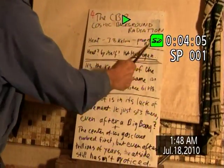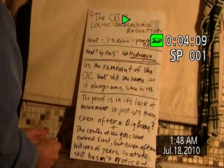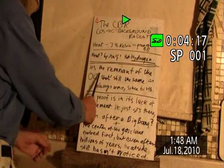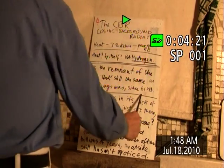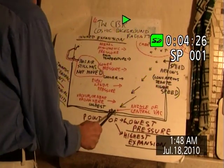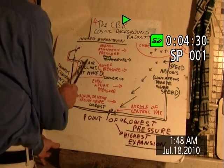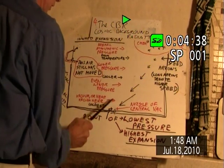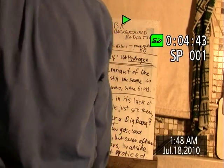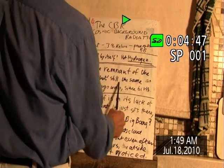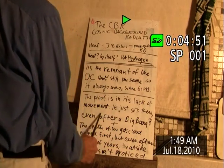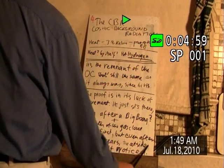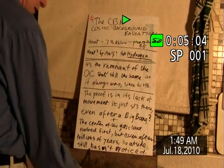Now, there's a cosmic background radiation way, way back up there — there's a heat. They say it's proof of the Big Bang, but I think it's warm hydrogen; it's the remnant of the original cloud, still the same as it always was since birth. However, this vacuum cleaner has been running for five minutes, but the air up here has still not moved. The air is elastic — this air doesn't even know there's a vacuum cleaner running, even after five minutes. The original hydrogen cloud is still there; this is a remnant of it. The proof is in its lack of movement — it just sits there. After a Big Bang, would it sit there? I don't think so. The center of the gas cloud evolved first, but even after trillions of years of evolution, the outside still has not noticed.